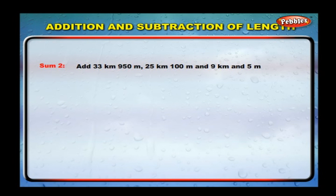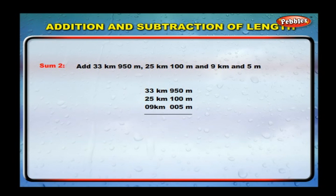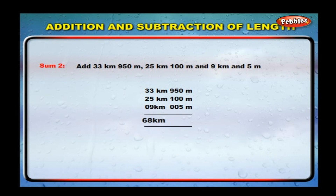Add 33 kilometers 950 meters, 25 kilometers 100 meters, and 9 kilometers 5 meters. Write the lengths to be added in columns: 33 km 950 m + 25 km 100 m + 9 km 5 m. We get 68 kilometers and 55 meters.